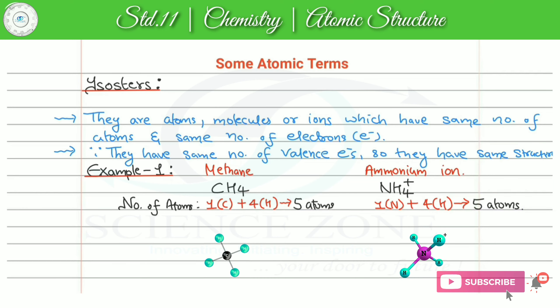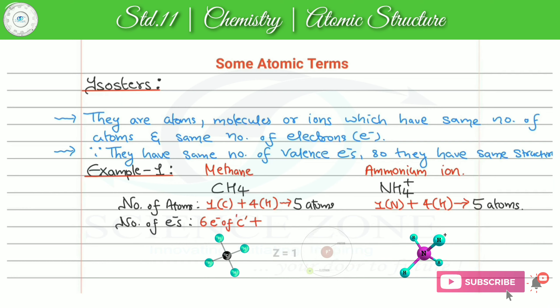दोनों species में number of atoms same है। Now second, we check number of electrons. Carbon का atomic number six है, which means carbon में six electrons होंगे — six electrons of carbon. Hydrogen का atomic number one है, one electron each, and there are four hydrogens — four into one electrons of hydrogen. Total electrons in CH4: it is 10 electrons.